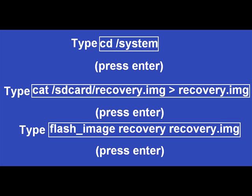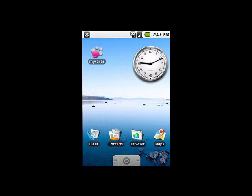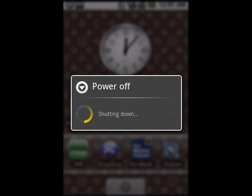Now that we're finished entering commands in both the Telnet application and the Terminal Emulator application, it's time to make use of the files we've placed on the SD card. So press your Home button, unmount, safely remove the device from your USB cord, and power off your phone.